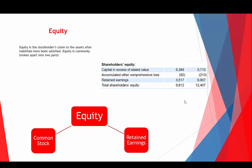Equity is broken into two parts — common stock and retained earnings. Anything contributed by the owners is called common stock, sometimes called additional paid-in capital or contributed capital; there are many different terms for it. Nike's equity section calls it 'capital in excess of stated value,' which is somewhat similar. In accounting, the same thing can be described many different ways, and you just have to get used to that — it's part of the language of accounting.